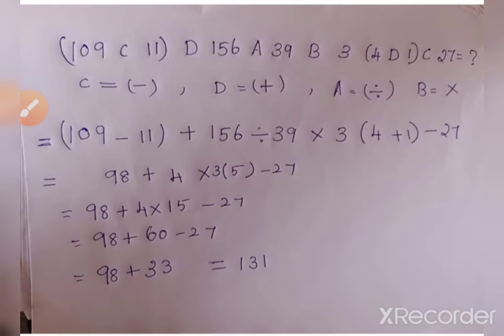109 minus 11 into 98 plus 156 divided by 39 value 4 into 3 into 5 minus 27. So the final answer is 131.